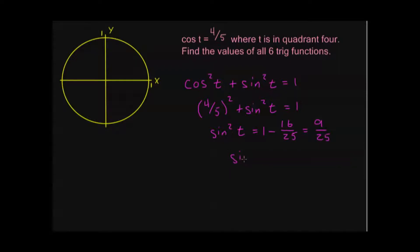So sine of t, taking the square root of both sides, is going to be plus or minus 3 over 5. Now I need to know whether this is plus or minus, and this is where my quadrant information comes in handy. I know I'm in quadrant 4, and I know that sine is going to be negative in quadrant 4 — it's below the x-axis — so sine is equal to negative 3 fifths.